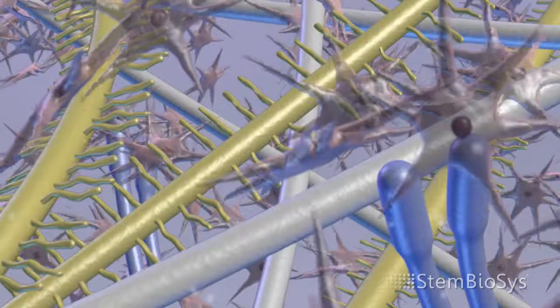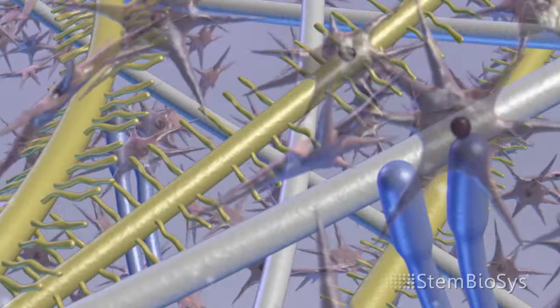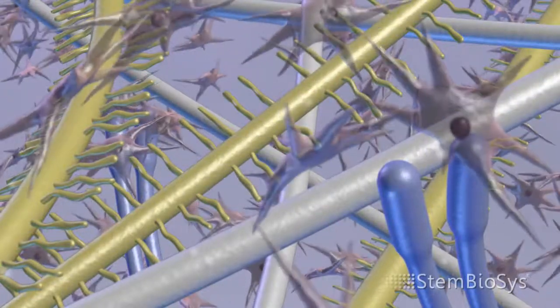This extracellular matrix is a complex, multi-protein composite that mimics the natural bone marrow niche for stem cells.